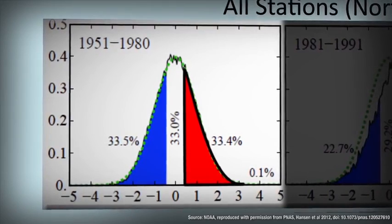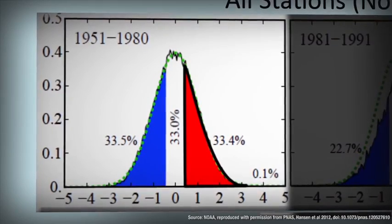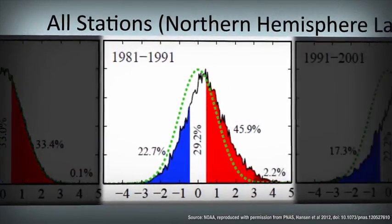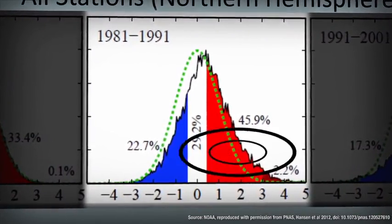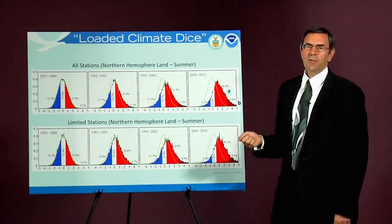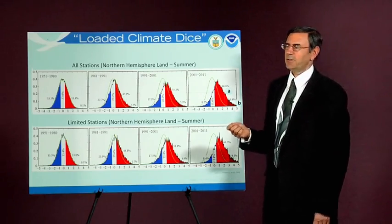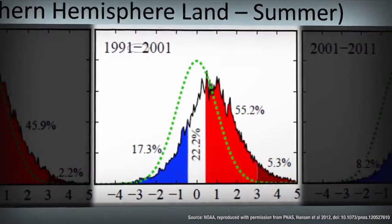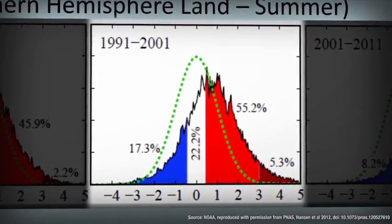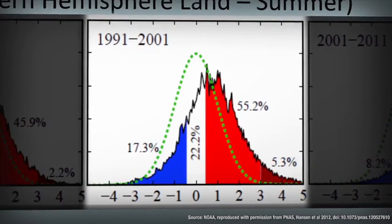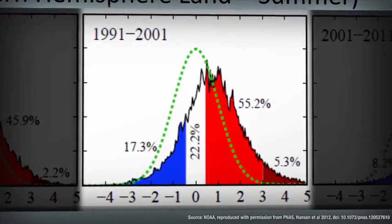Only about a tenth of one percent falls into the extremely warm temperature category. As the decades unfold, however, more of the data begins to fall into the above-normal category. For those familiar with the normal distribution, that is three standard deviations above normal. For 1991 to 2001, five percent of the data now falls in the extremely warm category — three standard deviations — and 55 percent, compared to 33 percent, falls in the above-normal category.